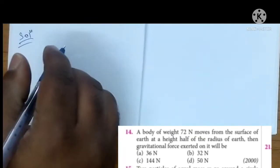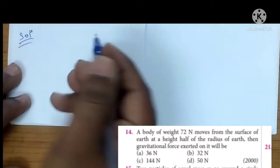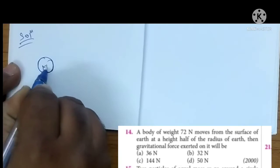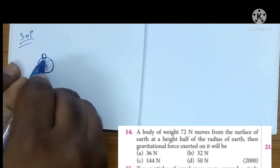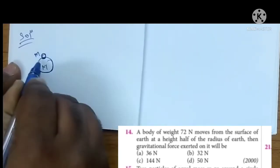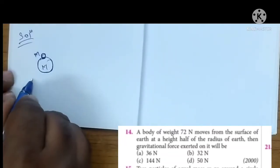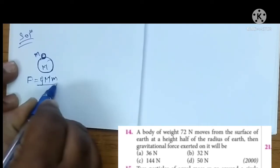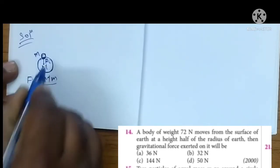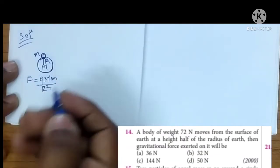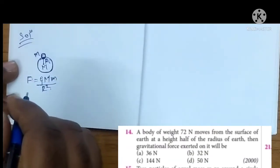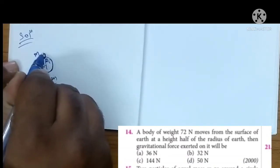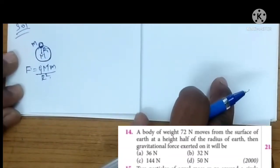Ither dekho. हमको पता है, यह Earth है, capital mass M है, Earth के ऊपर एक object है, उसका mass small m है. So gravitational force मैं कैसे लिख सकता हूँ? F equals GMm upon r square है. एक पहला situation है. बाद में देखो, इस object को मैं ऊपर लेके जाऊंगा.